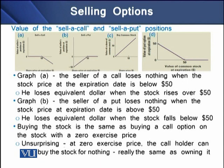On the screen, we see a diagram that depicts the value of selling a call and selling a put position. Graph A on the left side shows that the seller of the call loses nothing because the stock price at the expiration date is less than $50. In this contract, he loses an equivalent amount of money if the stock price rises over $50 — his loss will be equivalent to the rise in the stock price over $50.